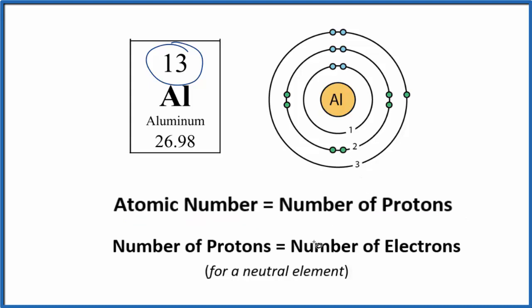The number of protons, when we have a neutral element, and all of the elements listed on the periodic table are listed as neutral, the number of protons equals the number of electrons. So we have 13 protons in the nucleus and then we have 13 electrons around that nucleus in these different energy levels here.